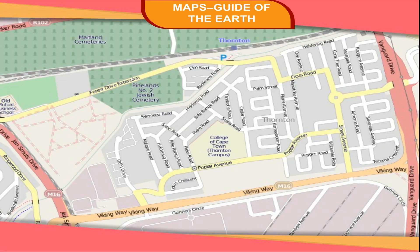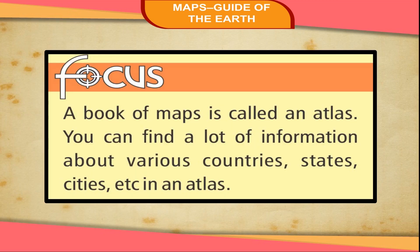To read a map, we must know about its basic features. A book of maps is called an atlas. You can find a lot of information about various countries, states, cities, etc. in an atlas.